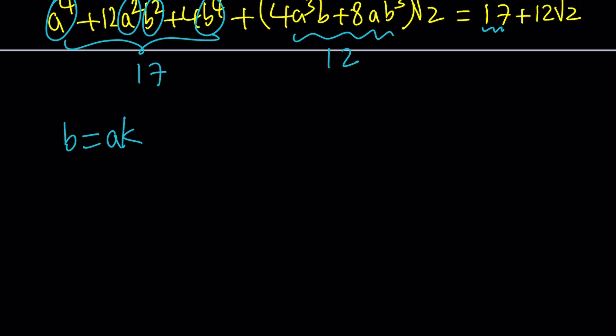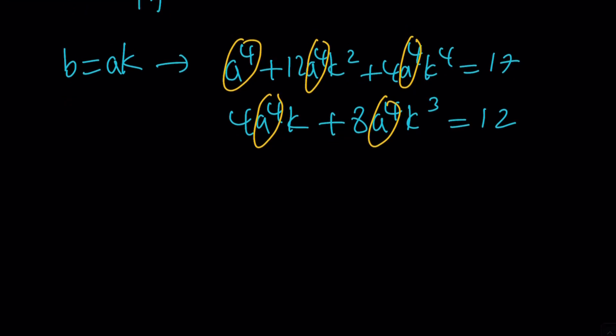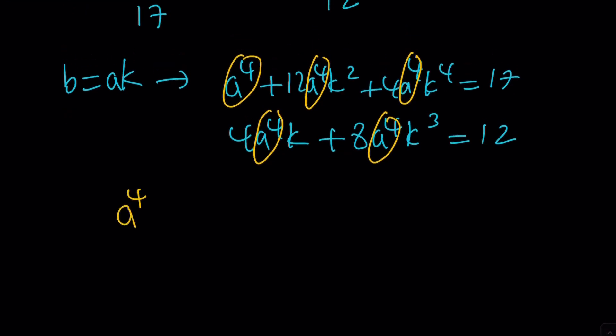But that's going to give me, after the substitution, two equations that could be simplified like this. I'm going to get a to the 4th plus 12 a to the 4th k squared plus 4 a to the 4th k to the 4th equals 17. And the other equation is going to be 4 a to the 4th k plus 8 a to the 4th k cubed, and that's going to equal 12. So we're going to factor out a common factor. In this case, it happens to be a to the 4th power. We can divide these equations side by side and cancel out a to the 4th power.